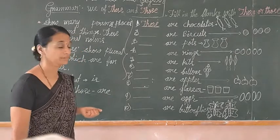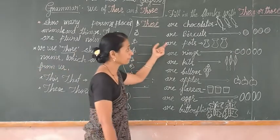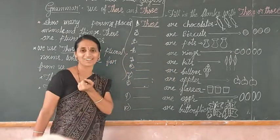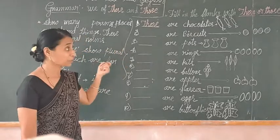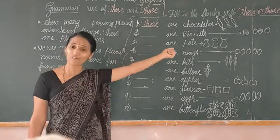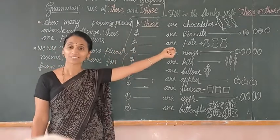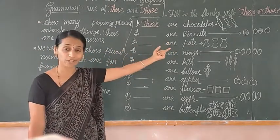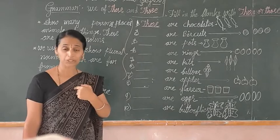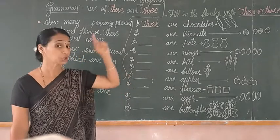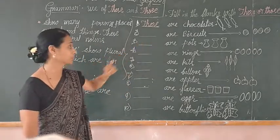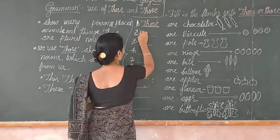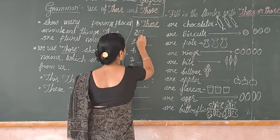Second example: blank of biscuits. Are the biscuits near to me or far away? Yes, biscuits are far away from me, so we can use 'those.'